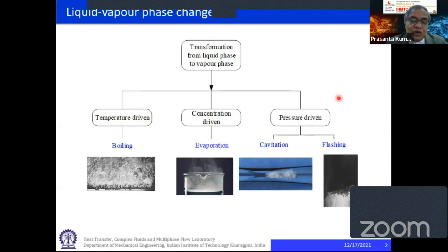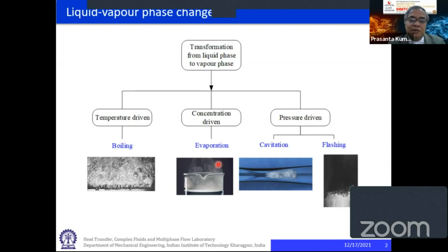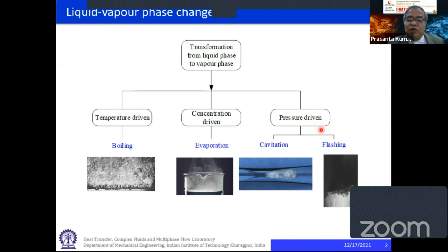Liquid to vapor phase change is not only complex, but it can be due to different driving factors. We have boiling, which is temperature driven. We have evaporation, where concentration difference of liquid vapor is the driving factor for phase change. Then, we also have pressure-driven phase change. If the pressure of the fluid is made below the saturation pressure corresponding to the temperature, then we can get cavitation and flashing.